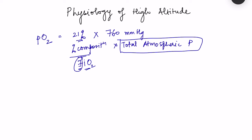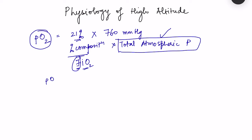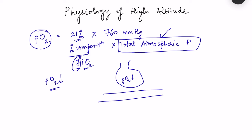At high altitude, the FiO2 remains the same at 0.21 — only the total atmospheric pressure is dropping. But since partial pressure of oxygen is determined by both, the partial pressure of oxygen is going to decrease. When the inhaled partial pressure of oxygen decreases, the partial pressure of oxygen in the alveoli decreases, and less oxygen can cross into the blood, so the partial pressure of oxygen in the blood vessels also drops.